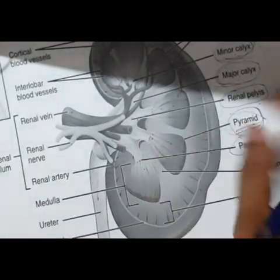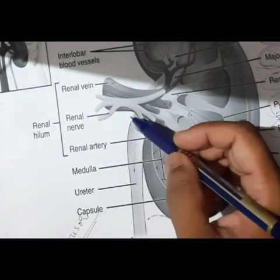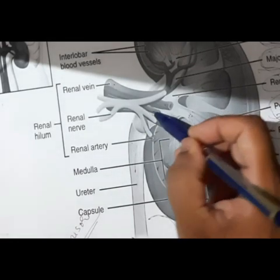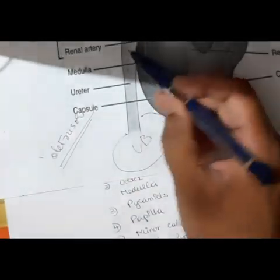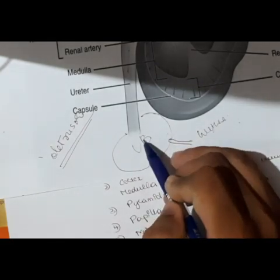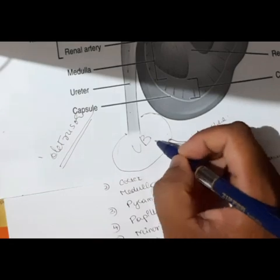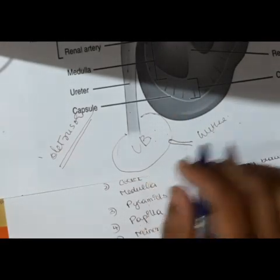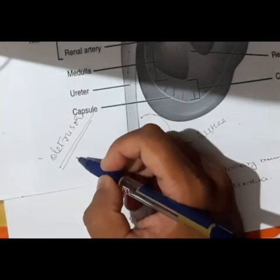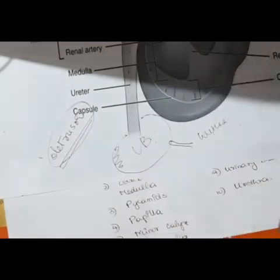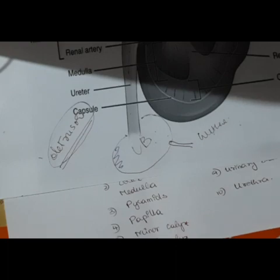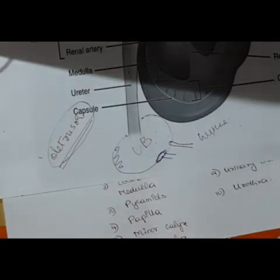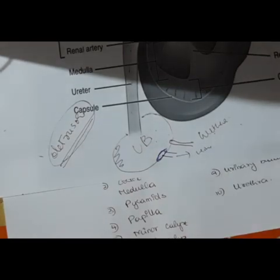The ureter is a hollow muscular smooth muscle tube that conveys urine from the renal pelvis to the urinary bladder. The urinary bladder is a hollow muscular organ that varies in size depending upon the amount of urine present in it. It is formed by smooth muscle, and the smooth muscles of the urinary bladder are referred to as detrusor muscles. The caudal continuation of the neck of the urinary bladder is the urethra, which conveys urine outside to the environment.